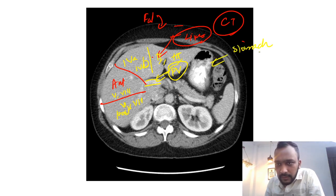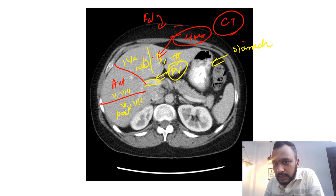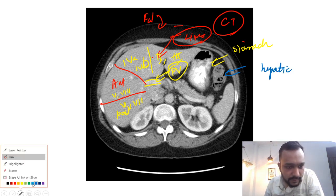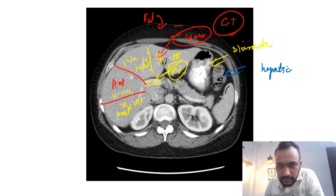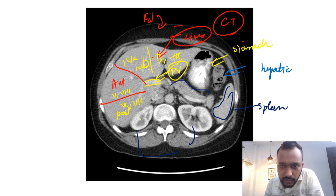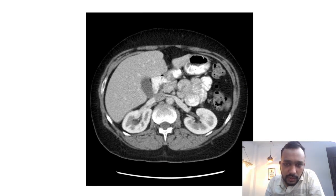This is your stomach, which is filled with oral positive contrast. This is the hepatic flexure of the colon. This structure is your spleen. You are seeing the two kidneys here, and this is your pancreas. This is the normal CT anatomy at the level of the liver.